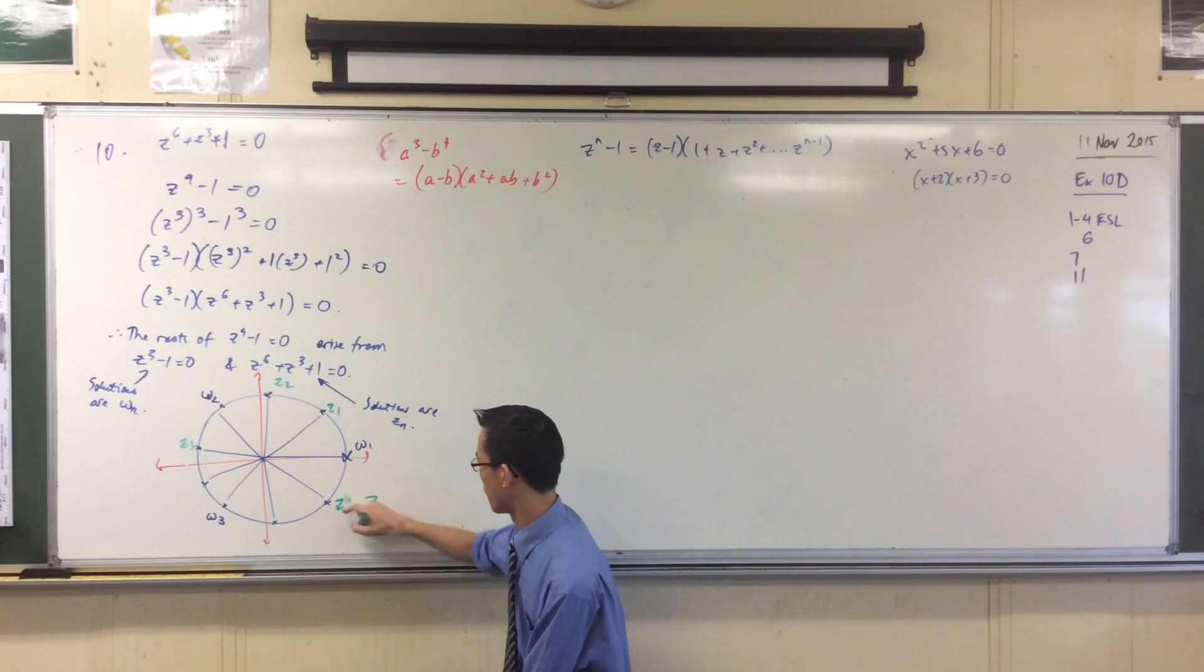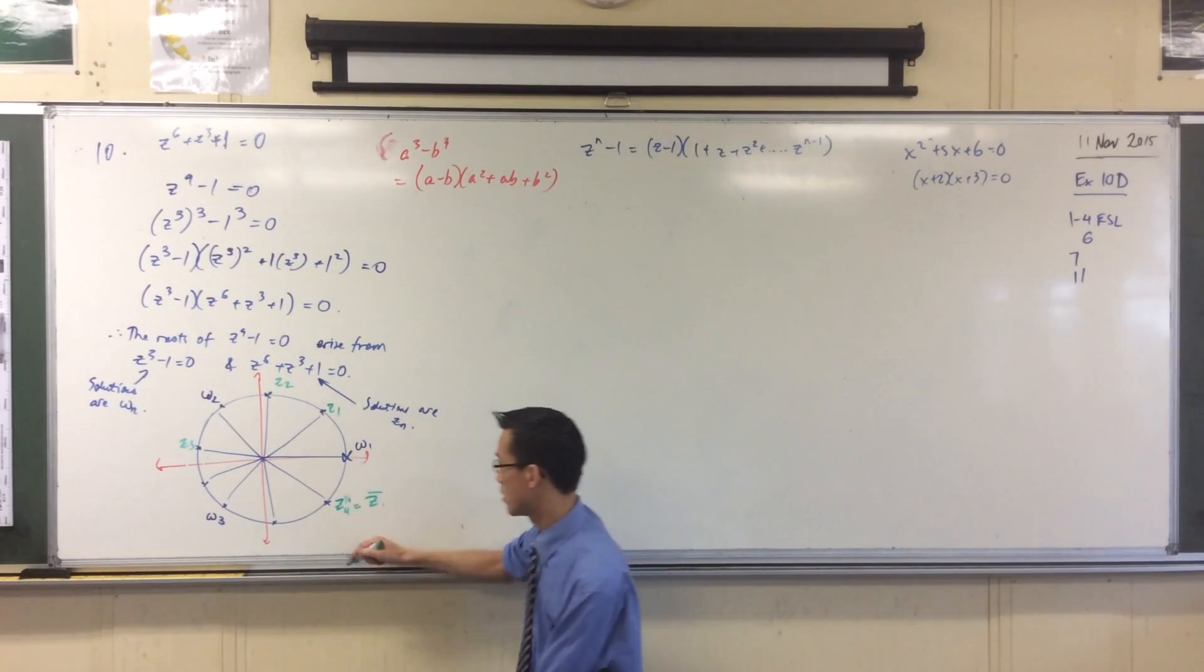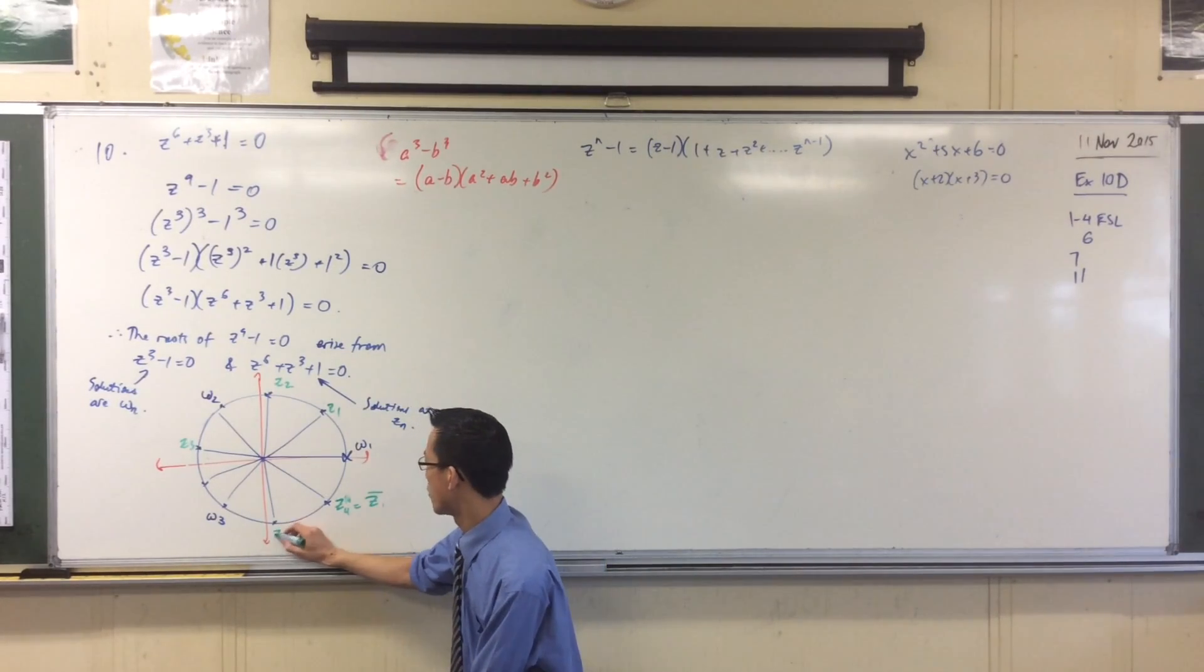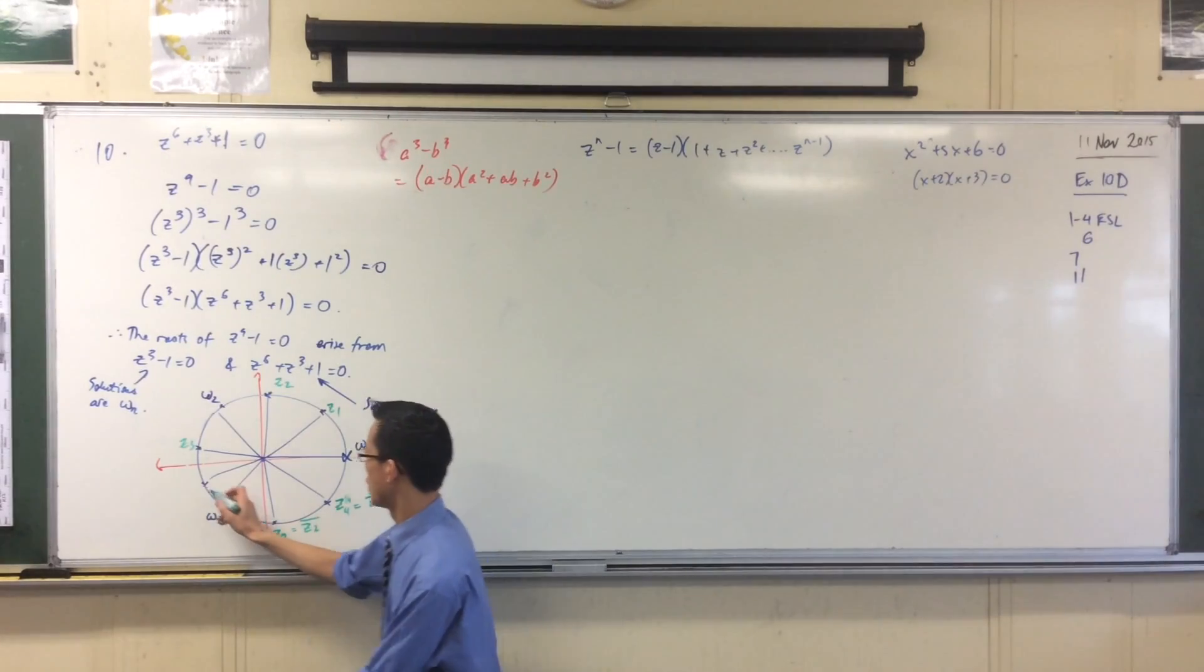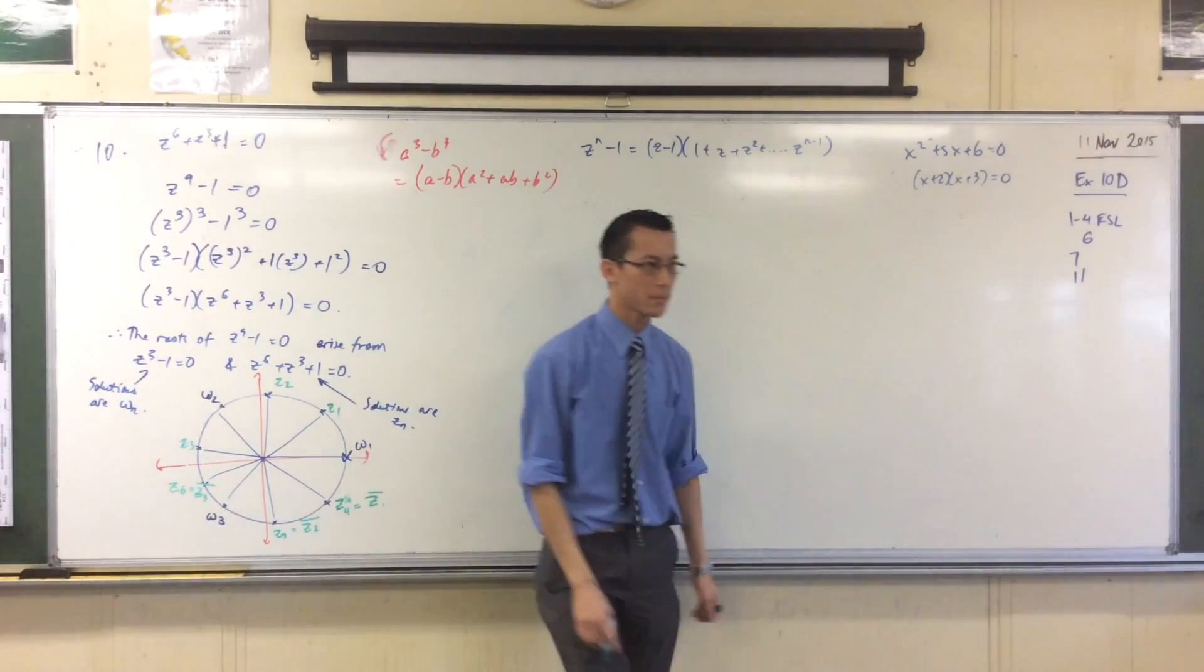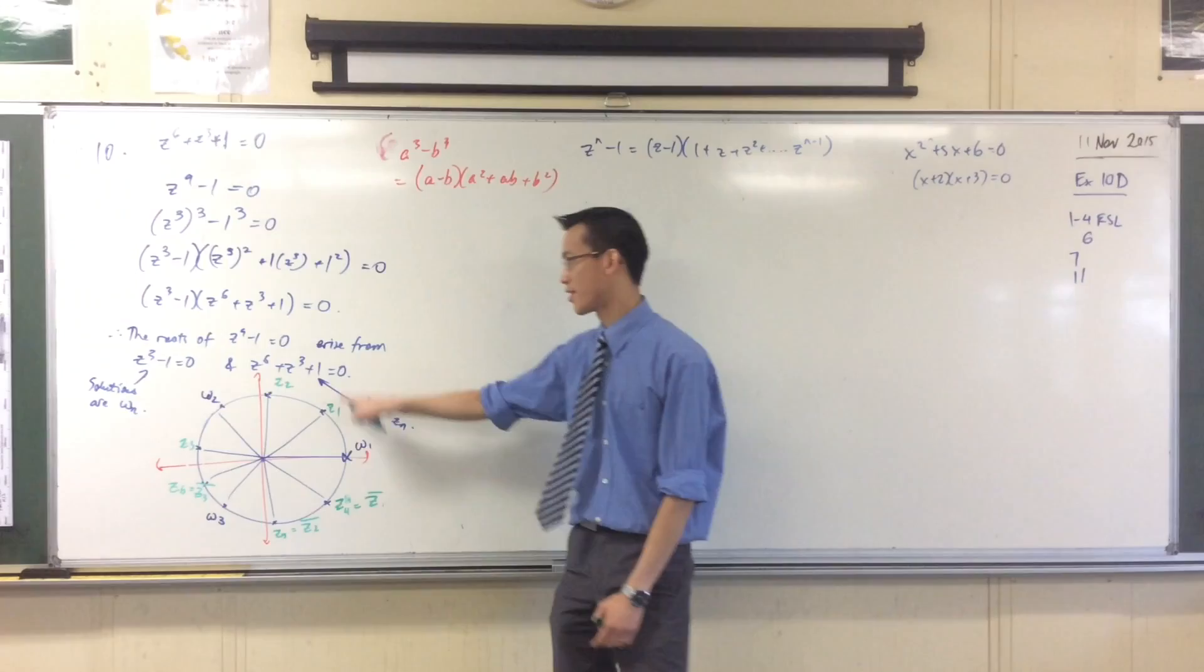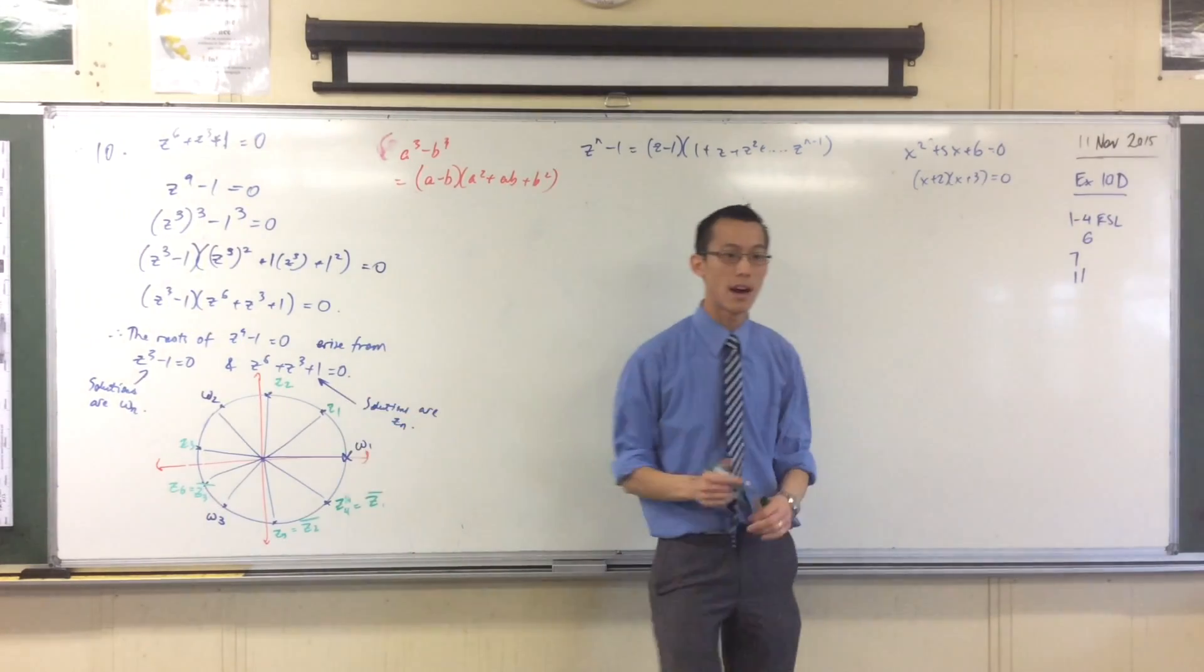Yeah, I'm pairing these up. Down here, I've got z₅, which is the conjugate of z₂, and there's my last one over here, z₆, which is the conjugate of z₃. And just as you expect, because it's a polynomial to the power of 6, you've got 6 solutions. I'm done.